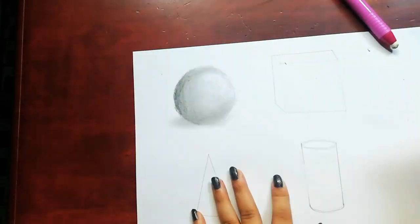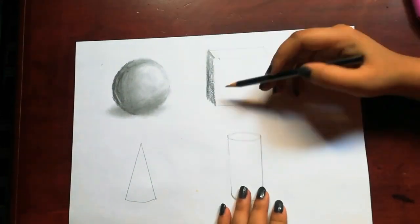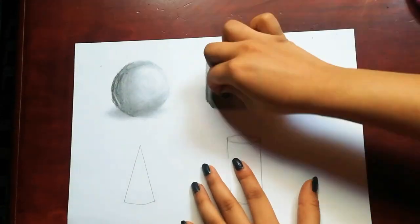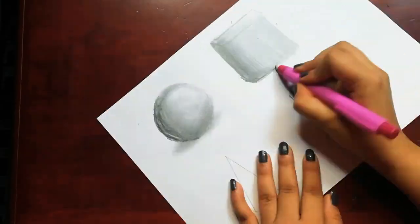You can see that the highlight is already formed and the cast shadow. Here I made a cube and just like the layers...